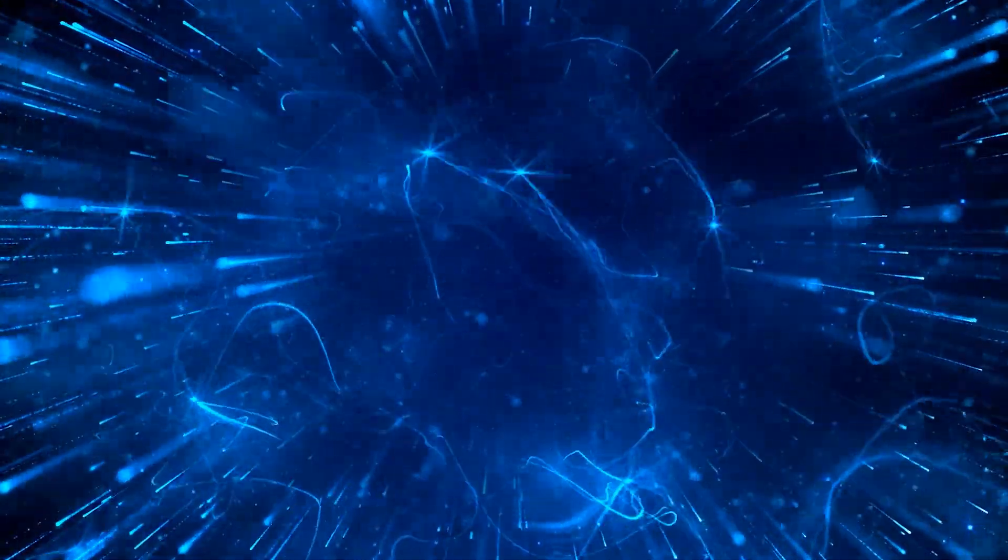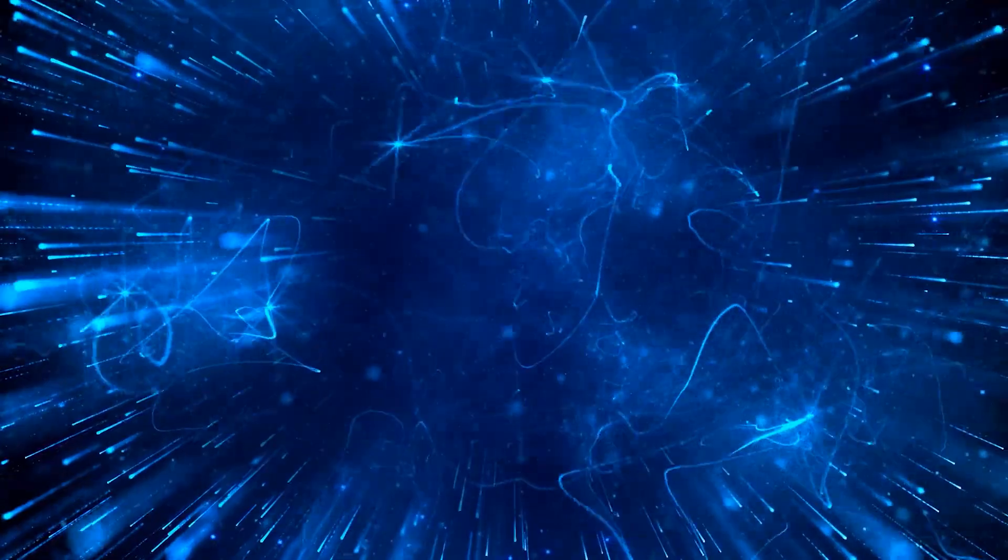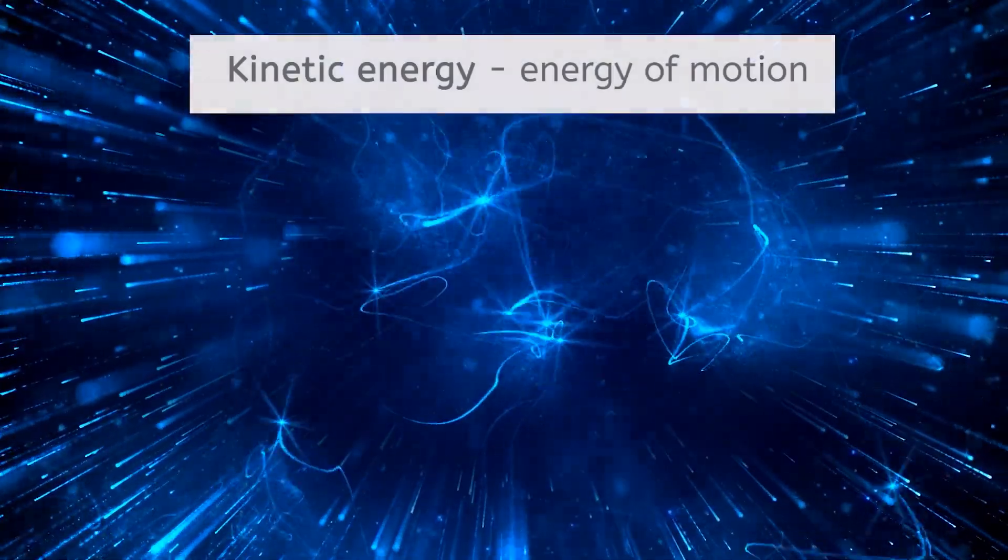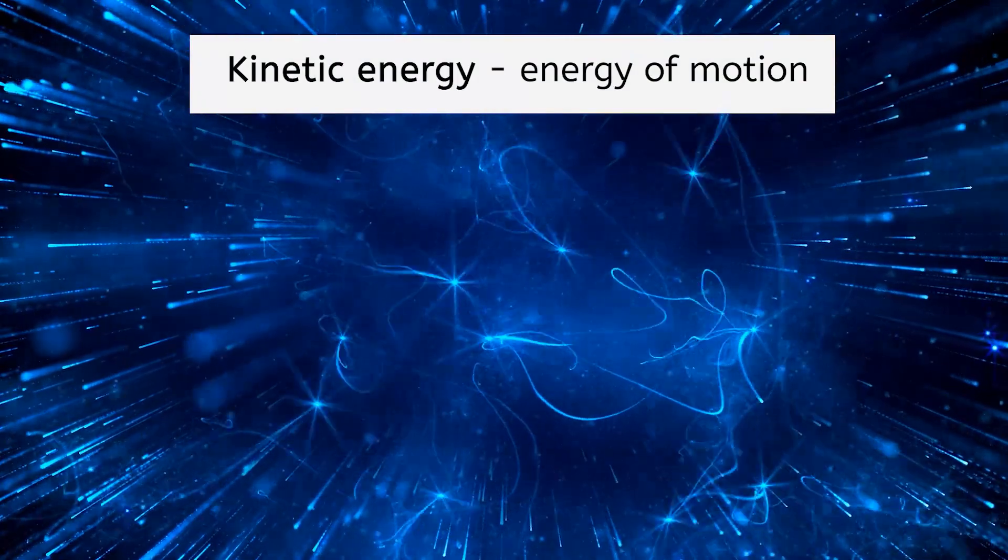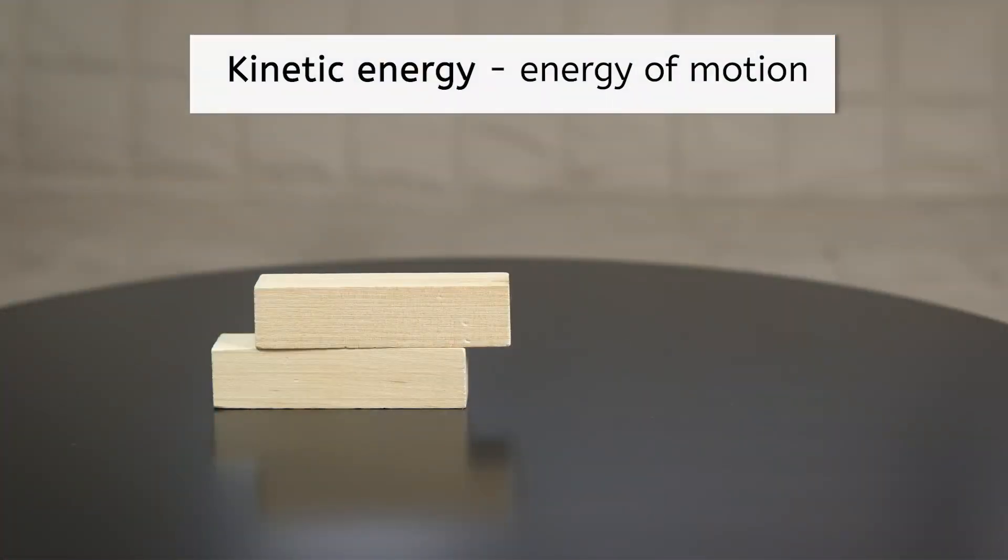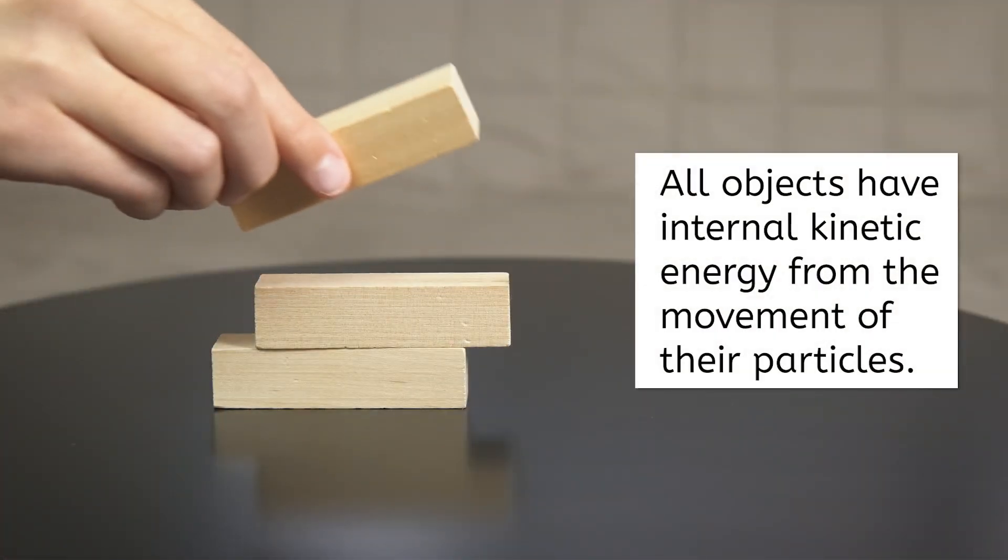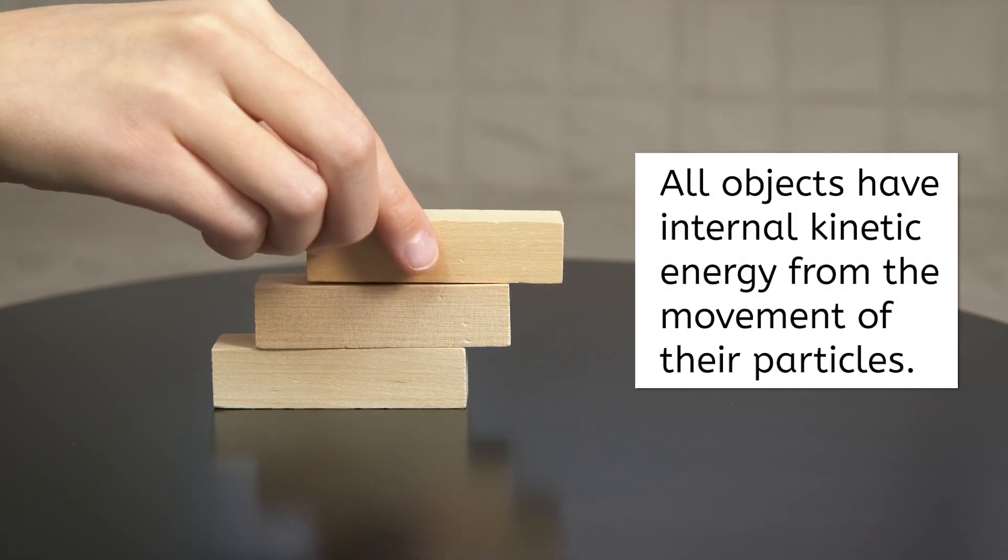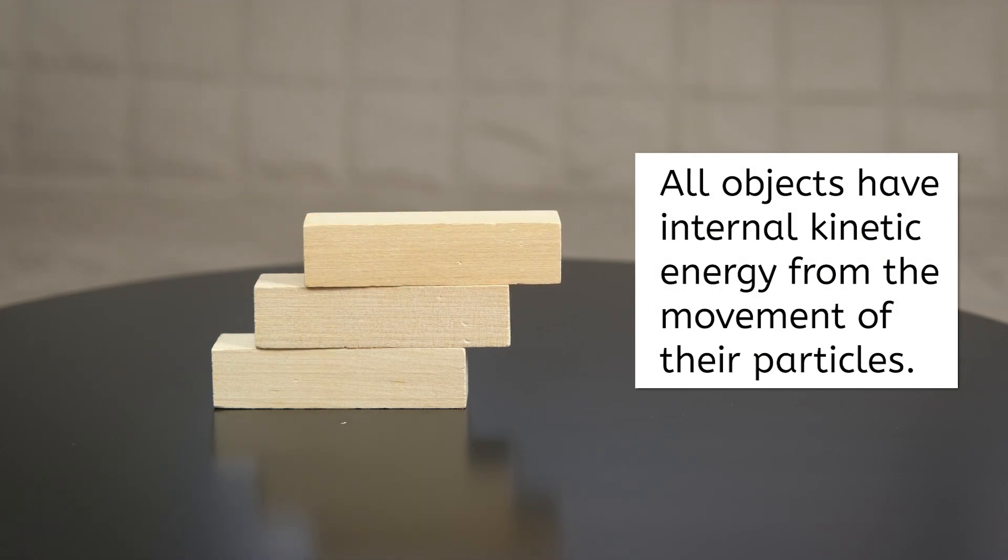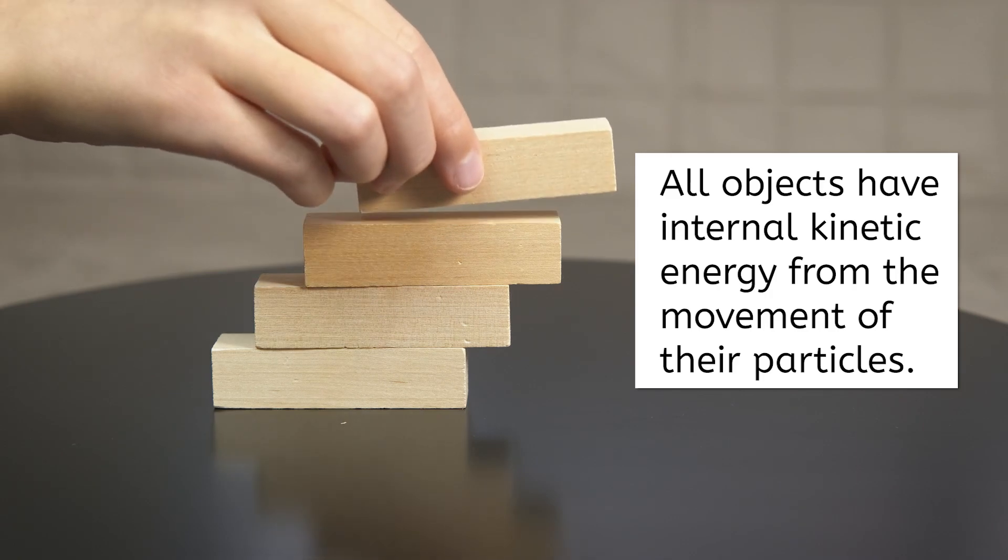You know from earlier units in the course that the particles making up substances are always in motion. And you also know that the energy of motion is called kinetic energy. Putting these two ideas together means that all objects have internal kinetic energy from the movement of their particles, even these wooden blocks when they're sitting on the table.